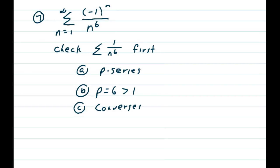Now even though this is an alternating series, I'm going to check the positive series first. So summation 1 over n to the 6th power, we'll see that very quickly is a p-series, part A. The power is 6 greater than 1, and so the positive series will converge.